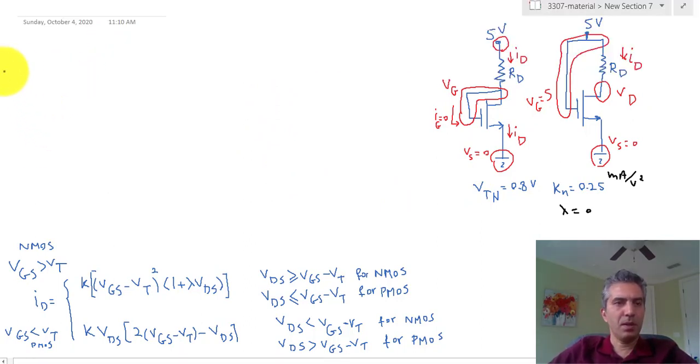Okay, KCL, equations for components. So for the resistor, ID is equal to 5 minus VD divided by RD.